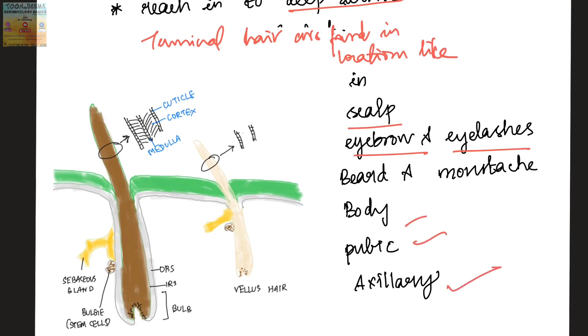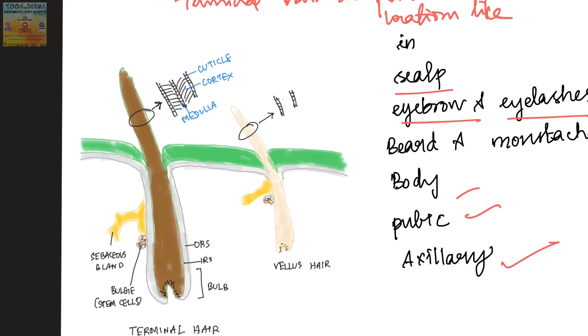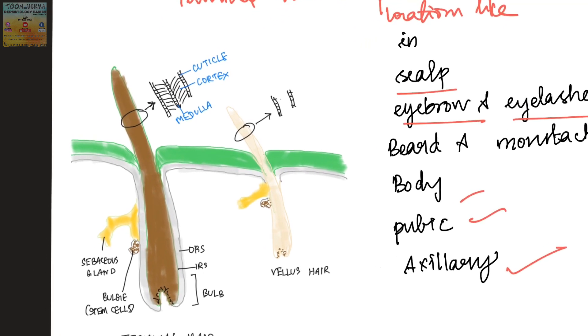If you see the terminal hair, it contains a cuticle, cortex, and medulla, whereas vellus hair has a cuticle and less cortex, but there will be no medulla.